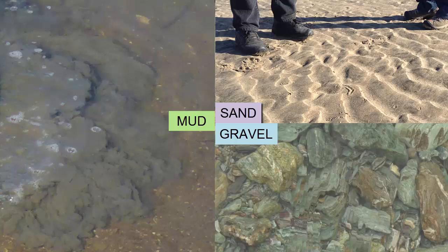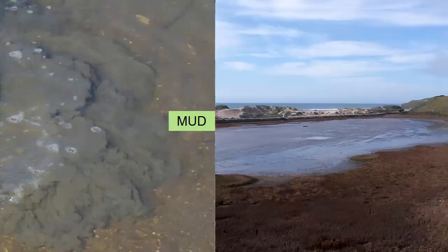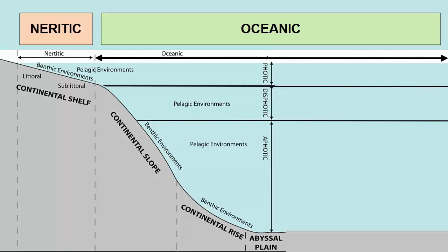Where is each of these grain sizes found in the ocean? The largest grains, the heaviest, settle quickly in still water and require high-energy water to be picked up and carried. The smallest grains require perfectly still, unmoving water to settle out. Ocean environments are separated into two major geographic zones.